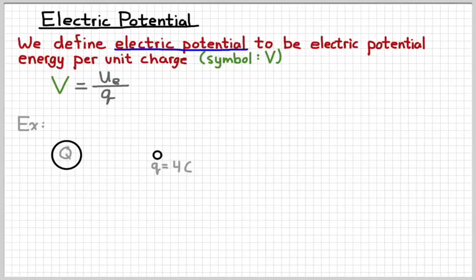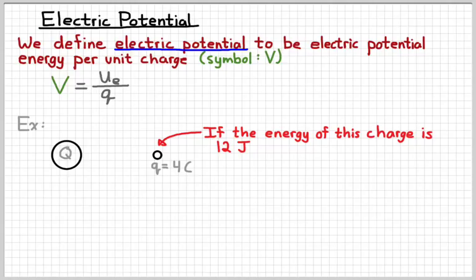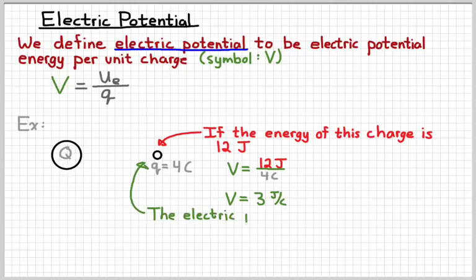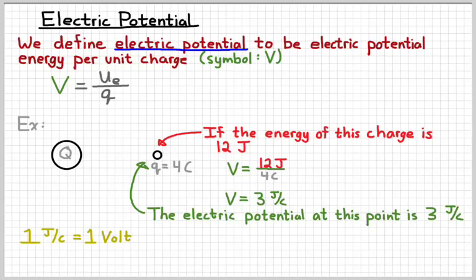For example, suppose we had some random big charge Q, and then we had some random small charge little q. We might refer to this little charge as a test charge. If we know that the energy of that small charge is 12 joules, then the potential at that location would be 12 joules over 4 coulombs, which would be 3 joules per coulomb. We're going to give a joule per coulomb a new name. We're going to call it a volt, named after an Italian fellow named Alessandro Volta. Mr. Volta basically developed the first crude battery.